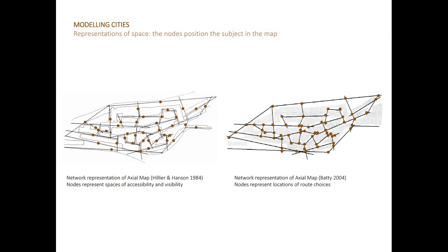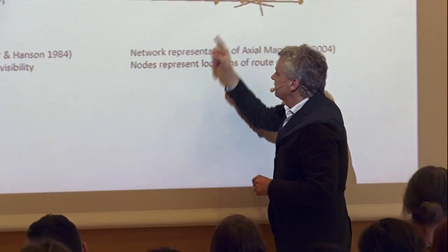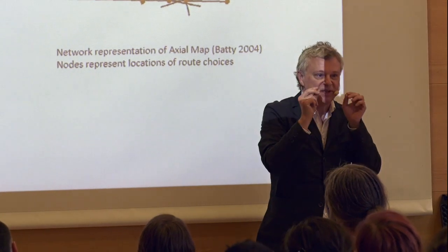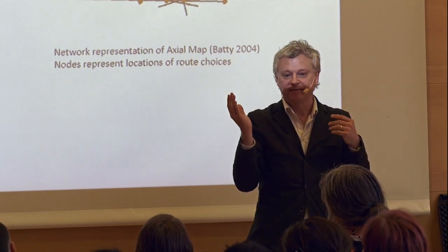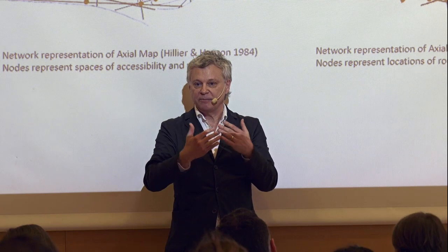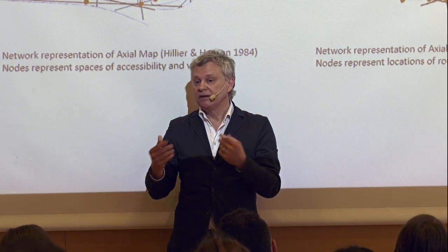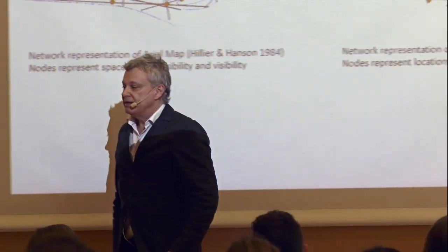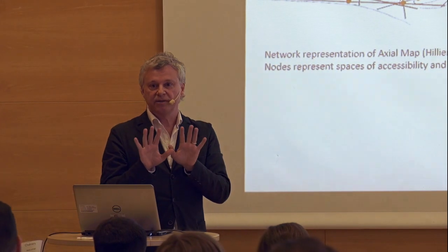The choice to say that the line is the node is quite important. Networks are used in traffic planning too, and a traffic planner would very naturally say the node is at the street crossing. But based on space syntax, we say the line is the node. This positions a subject in a very different way — it represents locations of spatial experience, not just route choices of 'should I go left or right?' It's much more generic, saying 'here I'm in a space which contains certain information about the environment.'